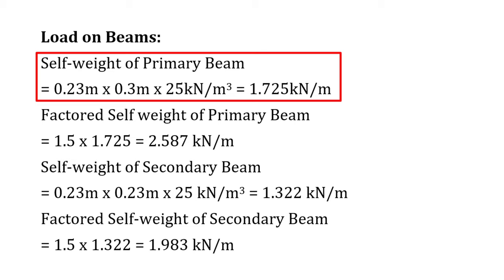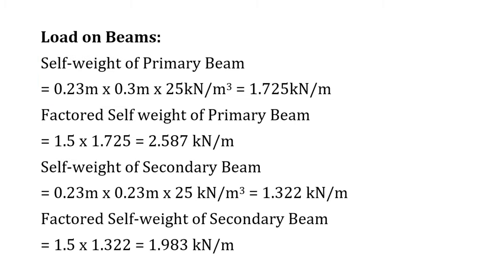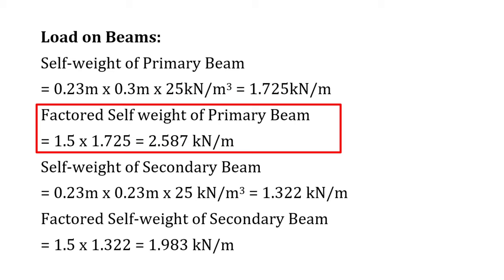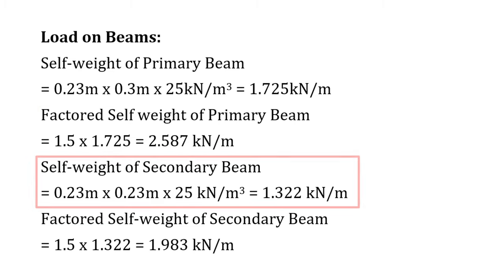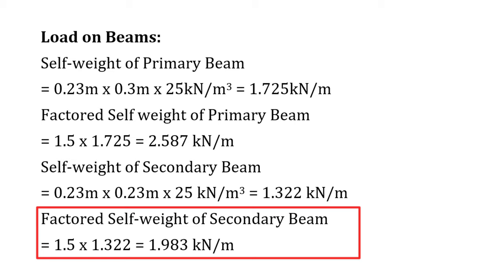Self weight of primary beam equals area of cross section times density of RCC. With cross section 230×300 mm and RCC density 25 kN/m³, self weight of primary beams equals 1.725 kN/m, and the factored self weight equals 1.5 × 1.725 = 2.58 kN/m. Self weight of secondary beam equals 0.23 × 0.23 × 25 = 1.322 kN/m, and the factored self weight equals 1.5 × 1.322 = 1.98 kN/m.